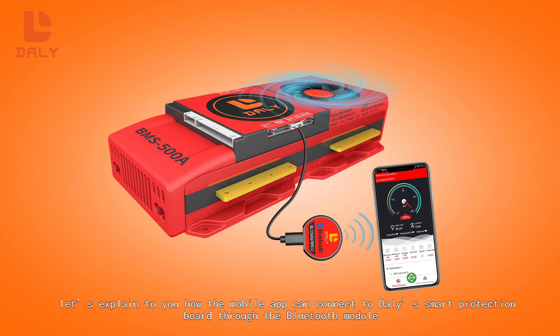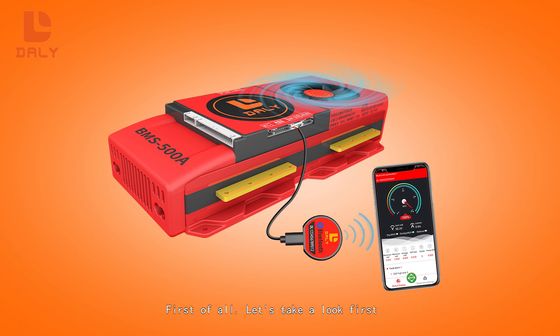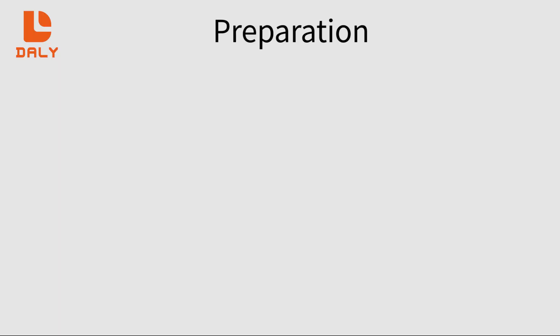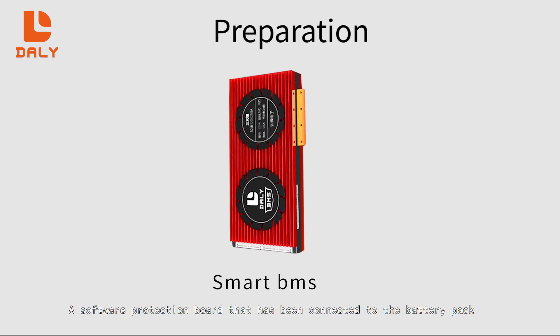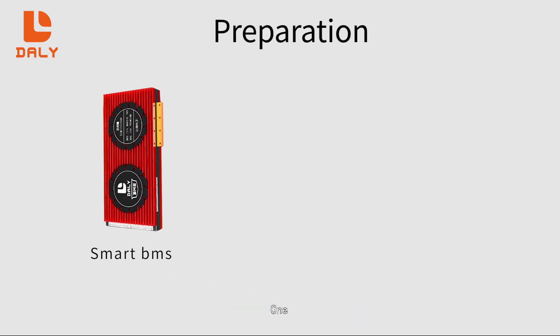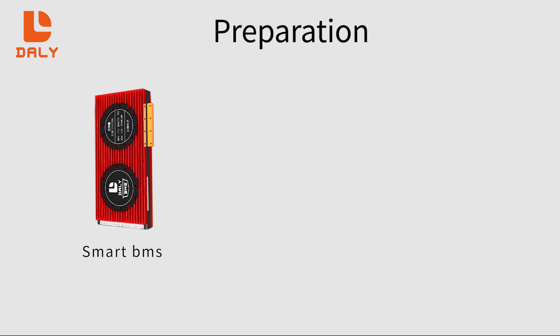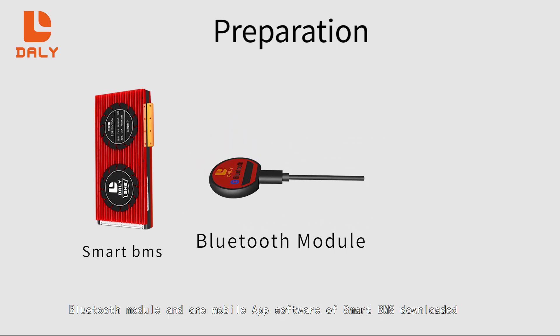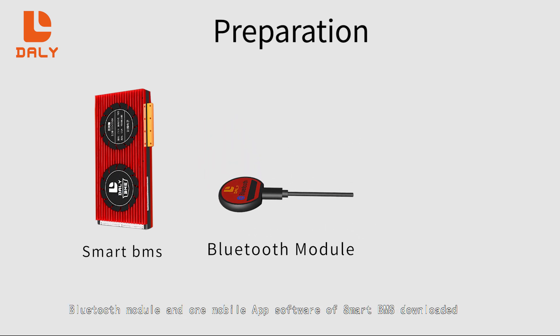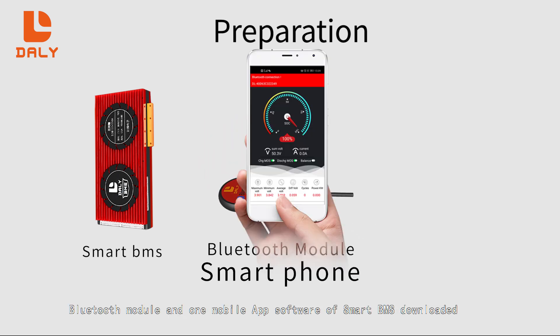Hello everyone. Today let's explain how the mobile app can connect to the Daly Smart protection board through the Bluetooth module. First, let's look at the materials we need to prepare: a software protection board that has been connected to the battery pack, one Bluetooth module, and the Smart BMS mobile app downloaded.